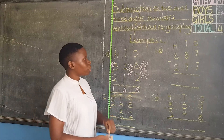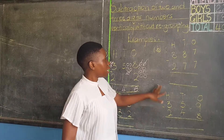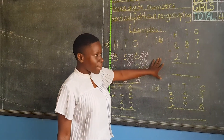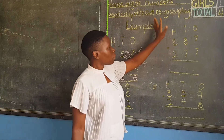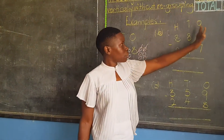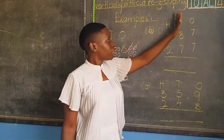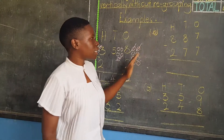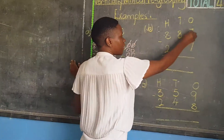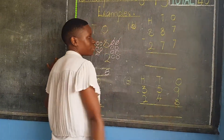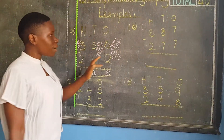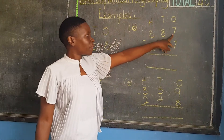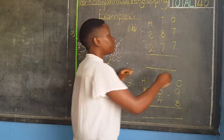We move on to Part B. We are subtracting three-digit numbers. So we are supposed to begin from ones, coming to your left. Bear it in mind that in subtraction, you draw balls for the first number on top only.